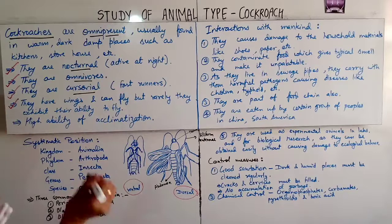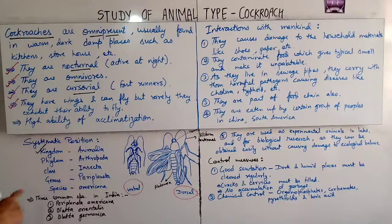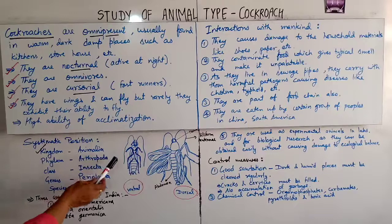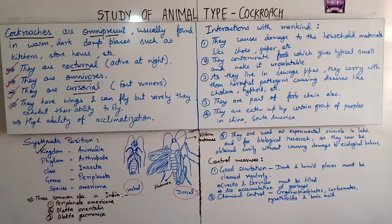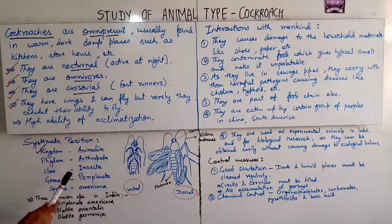Cockroach belongs to Kingdom Animalia, Phylum Arthropoda. The characteristic of Arthropoda is jointed legs, and the body is chitinous and segmented. Class Insecta, because they possess two pairs of appendages — wings and three pairs of walking legs.